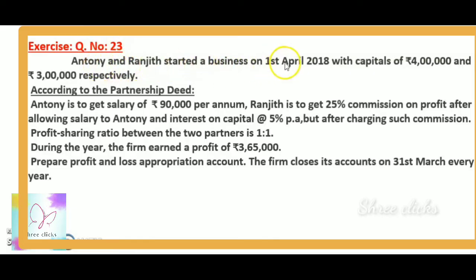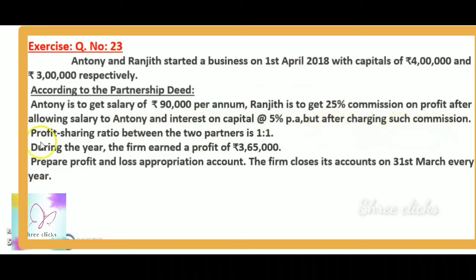Anthony and Ranjit started a business on 1st April 2018 with capital of 4 lakh and 3 lakh respectively. According to the partnership deed, Anthony is to get a salary of 90,000 per annum. Ranjit is to get 25% commission on profit after allowing salary to Anthony and interest on capital at 5% per annum, but after charging such commission. Profit sharing ratio between the two partners is 1:1. During the year, the firm earned a profit of 3,65,000. Prepare profit and loss appropriation account.